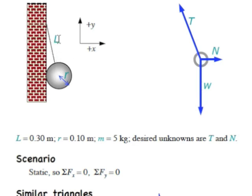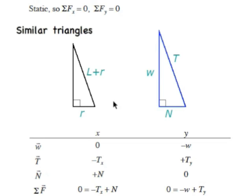Geometrically, we're going to use similar triangles. The direction of tension is the same as the direction of the cable. We have a geometric triangle where the hypotenuse runs from the wall to the center of the ball — that length is L plus R, where L is the cable length and R is the radius — and the horizontal distance from the center of the ball to the wall is also R. A similar triangle with the same angles but using forces has the normal force horizontally, the weight vertically, and the tension obliquely between them.